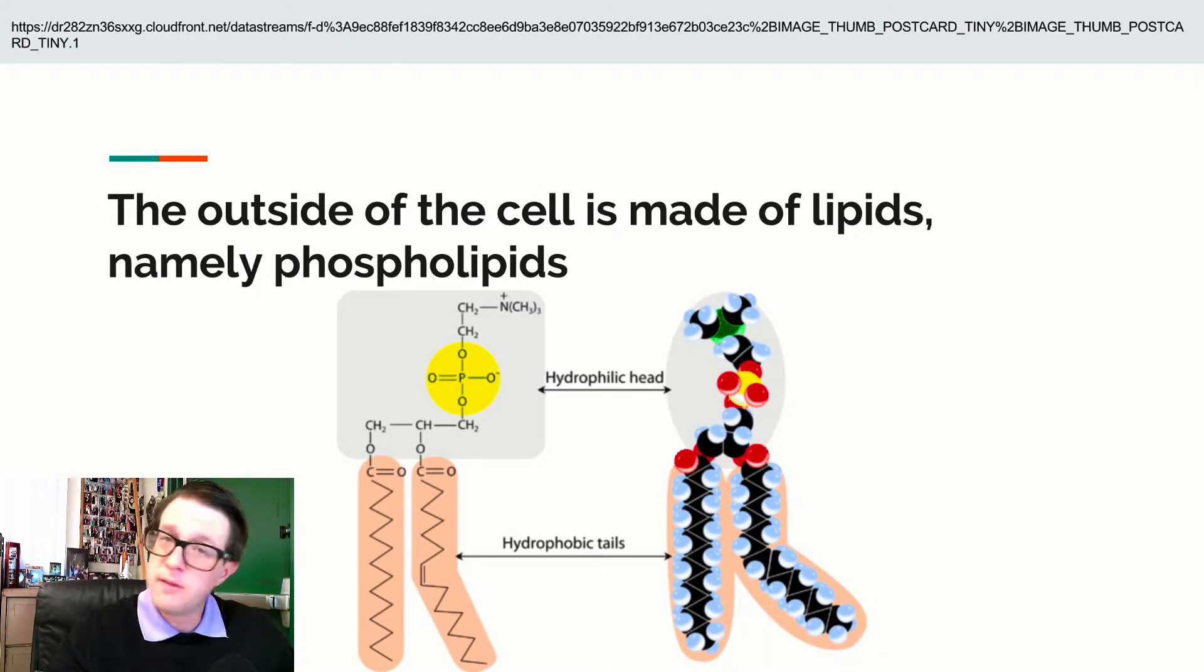One of those things that we can make are what we call lipids. Lipids are fats. And they're strange only because they don't really have a defined version. There's a lot of variety of fats. In particular, the one that we're going to look at is what we call a phospholipid, which is this thing here, which we'll deal with when we start building the cell.